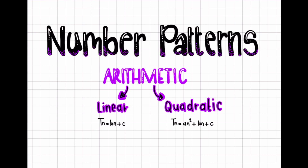You can see the difference in the formula — I've put them both there for you. tn equals bn plus c for linear, and tn equals an squared plus bn plus c for quadratic. You'll notice that an squared plus bn plus c has a degree of 2. Whether you're talking about quadratic number patterns, quadratic functions, or quadratic equations, you always have the degree of 2, and that's what tells you it's going to be a quadratic number pattern.